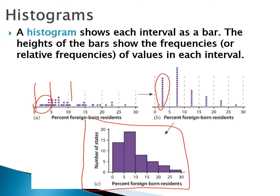One important note, since this is one of the more confusing things: the number starting a bar is the beginning of that bar, not included in the previous one. This first bar starts at 0 and goes up to, but not including, 5 — because 5 is actually in the next bar. So it goes up to 4.99999, et cetera. If a state has exactly 5% foreign-born residents, that value goes in the second bar.